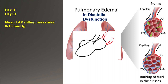In diastolic dysfunction, the left ventricle becomes stiffer and blood flows with difficulty into the left ventricle. With progressing diastolic dysfunction, left atrial pressure increases. This increased left atrial pressure is transmitted to the pulmonary veins, causing high hydrostatic pressure at the capillary level in the lungs, resulting in interstitial edema and alveolar edema — which is the reason for shortness of breath in diastolic dysfunction.